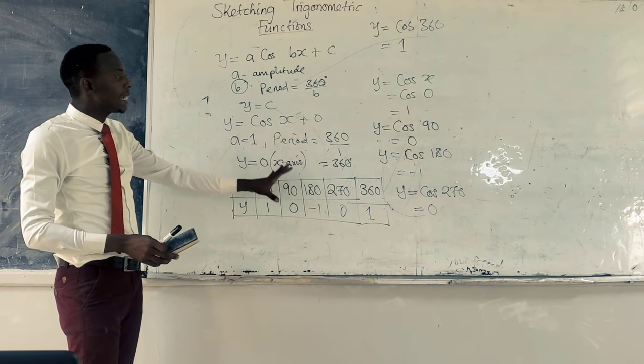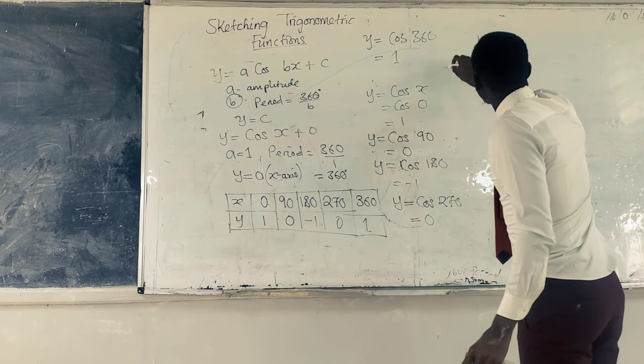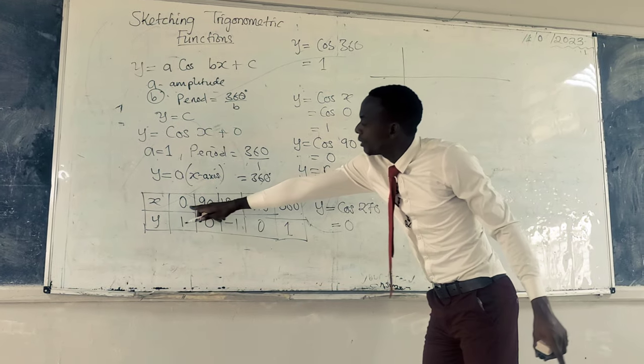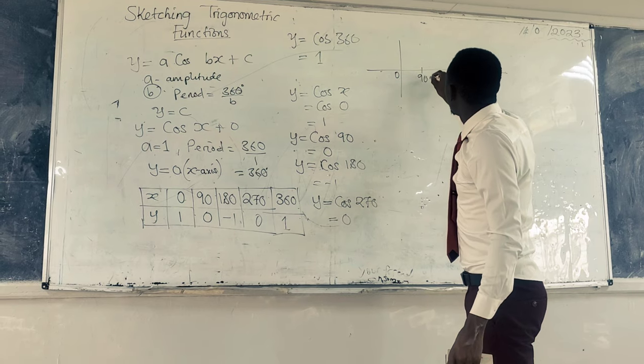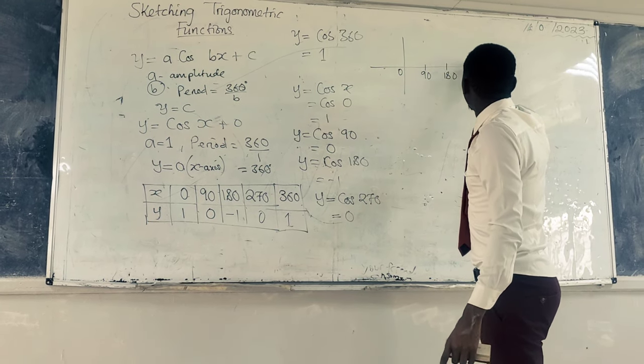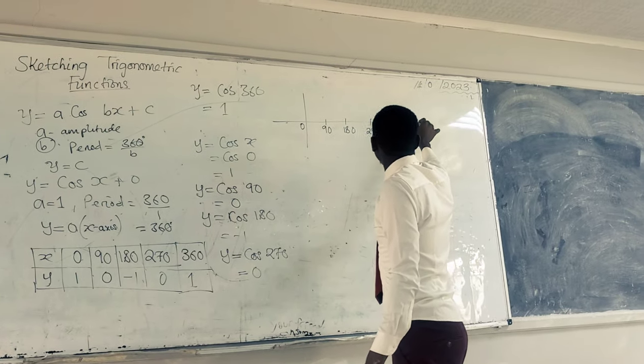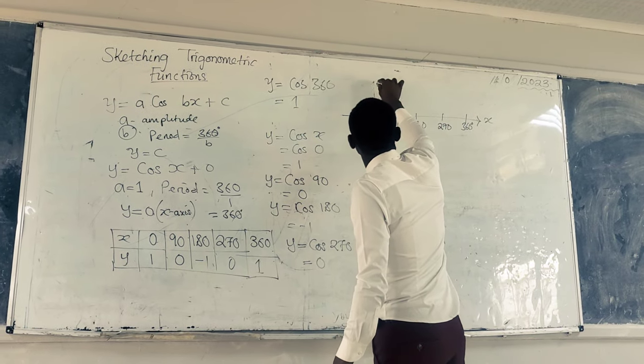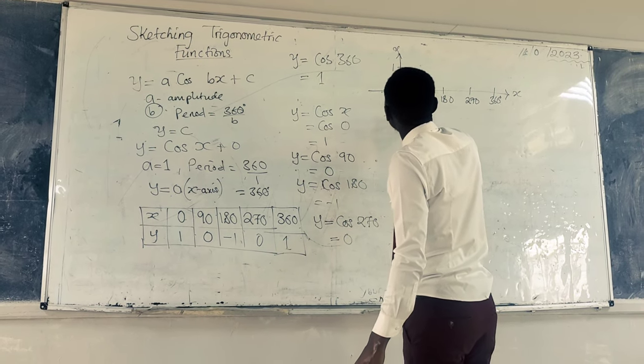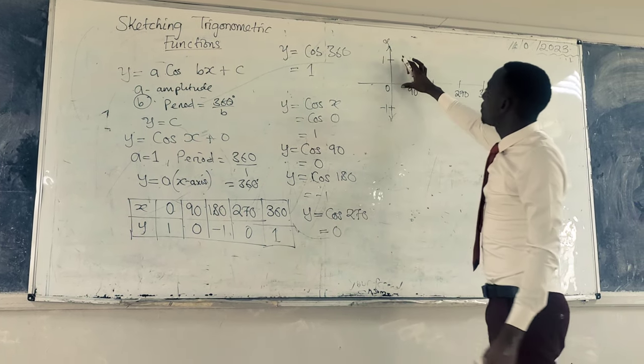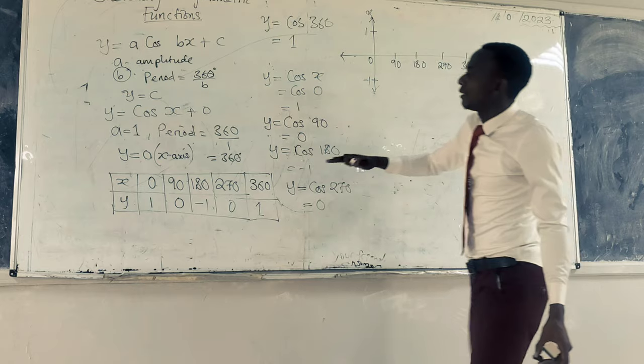This table of values is the guide for you to sketch. So in this case now, it means that along the X axis we are moving from 0 up to 360. So we have 0, 90, 180, 270, and 360 degrees. This is the X axis and the Y axis we have 1 and negative 1. This is the amplitude. We have discussed that the principal axis is the X axis.